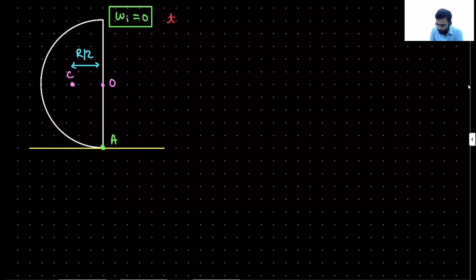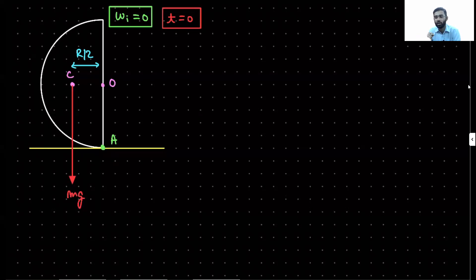At T equals zero, that means just after the release, the weight of the shell acts on the center of mass. The weight acts at every part of the body, but when calculating the torque due to gravity, we can assume the whole weight is concentrated at the center of gravity, which coincides with the center of mass when acceleration due to gravity is constant.